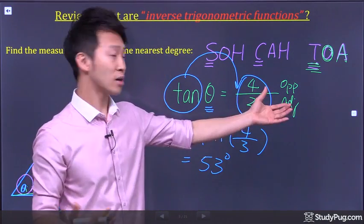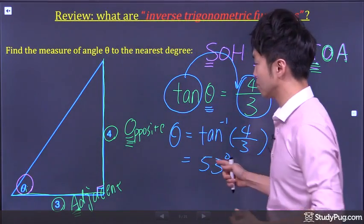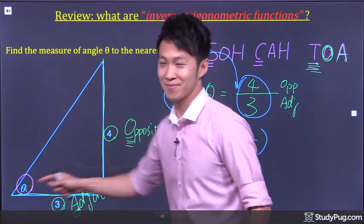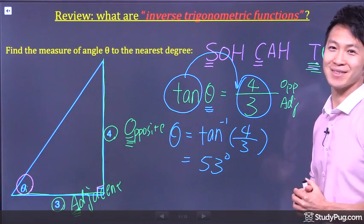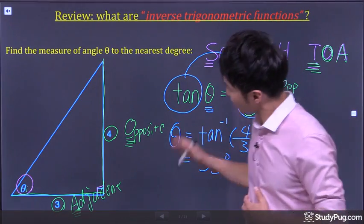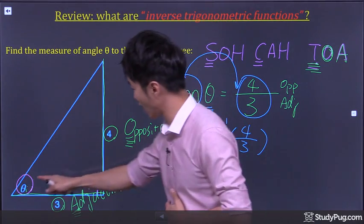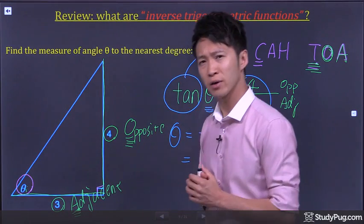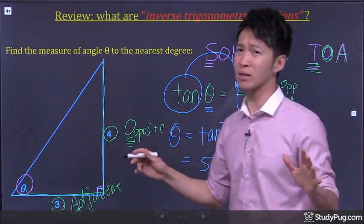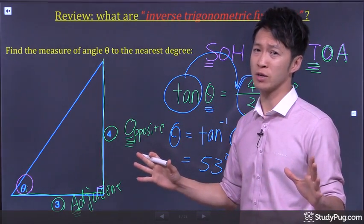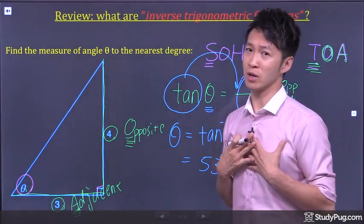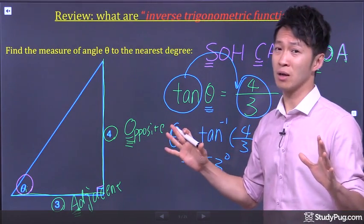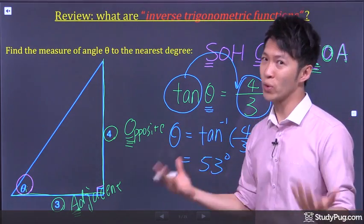So just like that, the calculator helps us find the angle theta to be 53 degree. See, questions like this, where we are asked to solve for an angle in a right angle triangle, we've done tons and tons of practice in various math courses over the years. They are so natural to us. Almost like breathing. We do it without thinking how we are doing it.